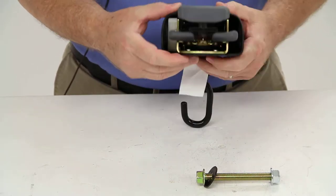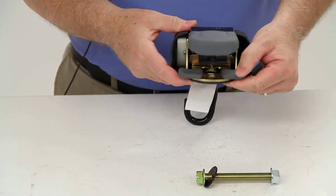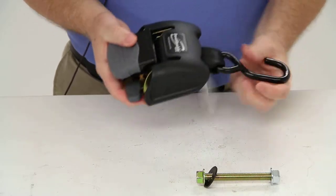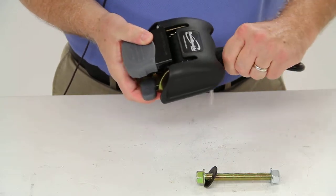It does have a dual-release lever which is on each side. It has a vinyl-coated steel S-hook which will help protect the finish of your boat.